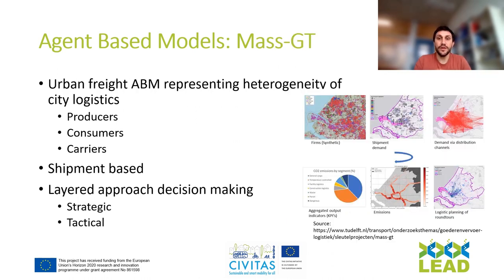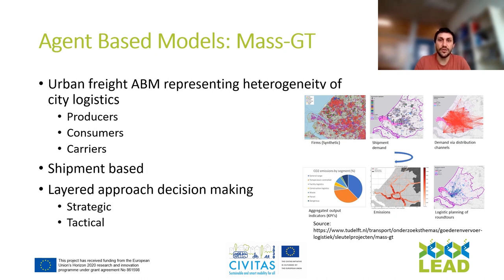The other agent-based model used in the LEAD platform is MassGT. MassGT is an urban freight agent-based model that allows us to represent the heterogeneity of city logistics. The agents are producers, consumers, and carriers. It is shipment-based, meaning the main unit of decision for carriers is the shipment. This gives the model many logistical properties and decision-making elements, making it more realistic to what actual companies, shippers, and carriers are doing.